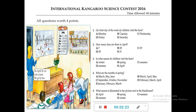Question 1: On what day do children visit the farm? You can see the farm visit is on April 20. Go to the calendar and check which day April 20 falls on. Counting through the calendar: Monday, Tuesday, Wednesday — you can see the 20th is a Wednesday. So answer C is correct. This is how you find the answer.